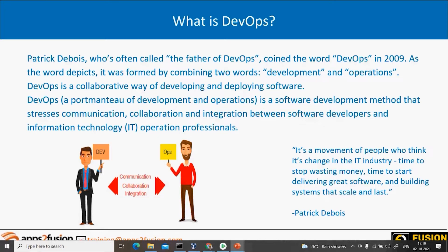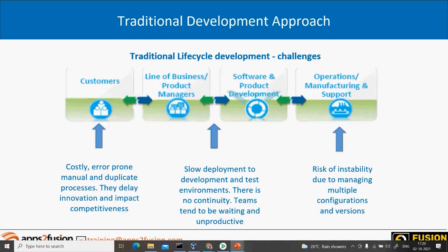At that time, he felt there was a communication gap between two teams working in silos — the development team and the operations team. These were two separate teams working independently, with very little communication between them. They were not working in a collaborative and integrated manner, and that's the reason this term DevOps was invented.